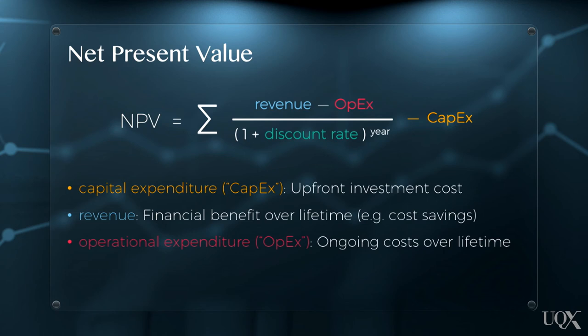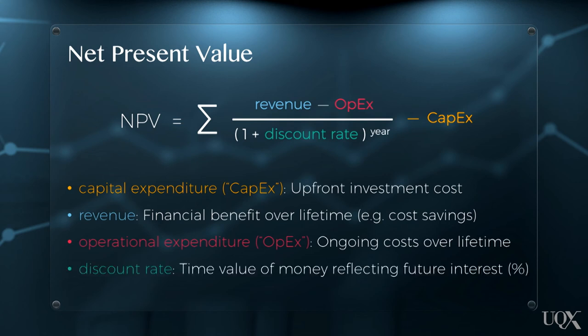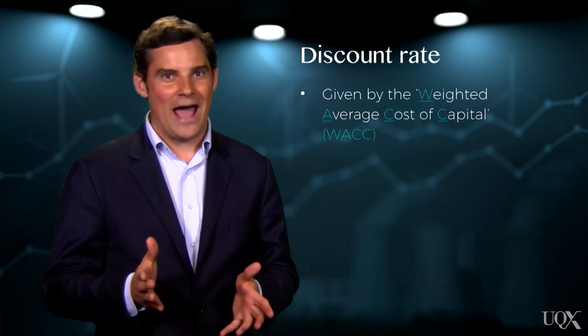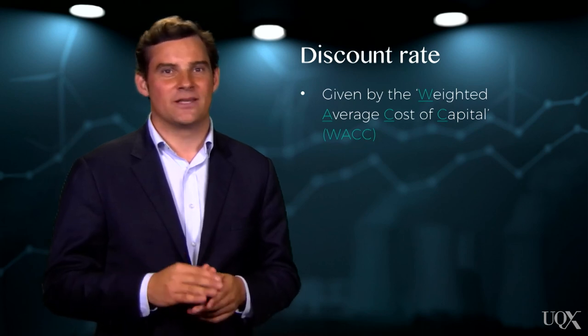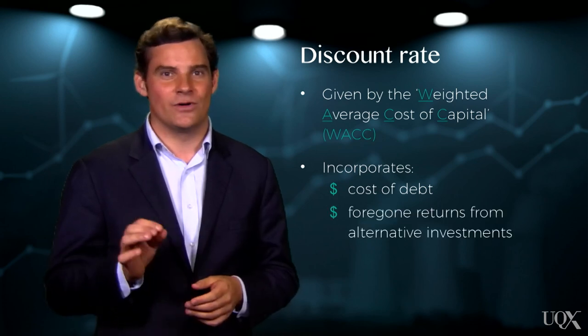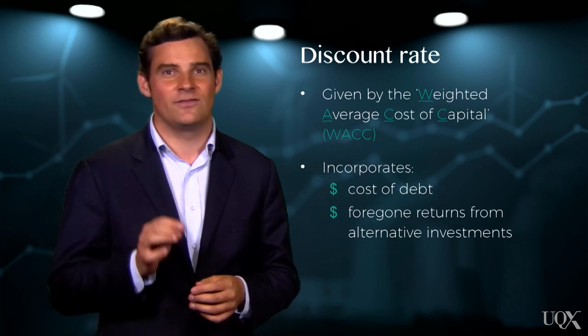Operational expenditure, or OPEX, is the ongoing cost of the project over its lifetime. For a solar PV project, OPEX may include the annual cost of cleaning solar panels to ensure efficiency is maximised. And finally, discount rate reflects the time value of money when that money is borrowed. In our earlier example, this was 2%. Discount rate is given by the weighted average cost of capital, or WACC. This principle incorporates the cost of debt – for example, a loan from a bank – as well as the cost of equity, that is, the foregone returns that could have been achieved from alternative investments.